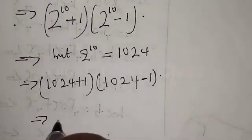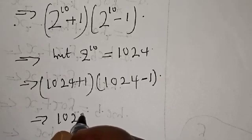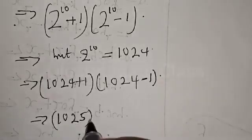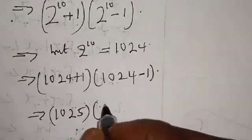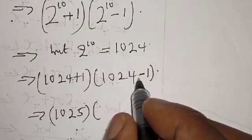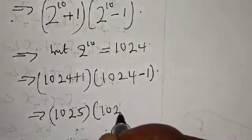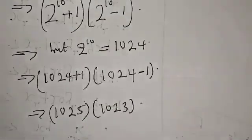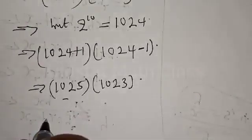1024 plus one is 1025. This implies we have 1025 multiplied by 1024 minus one, that is 1023. So we have 1025 into 1023.